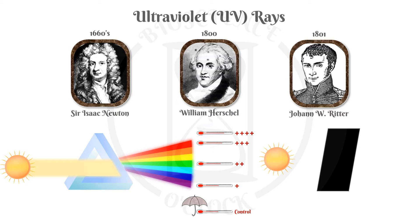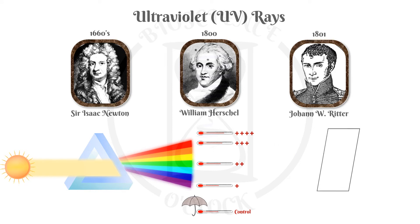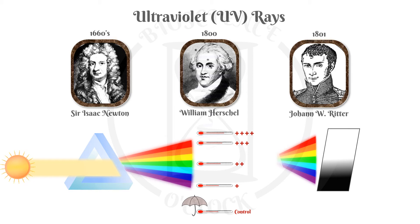Ritter's experiment went one step further and with the same setup, he realized that the darkening of the paper coated in silver chloride was more powerful beyond the violet light. And so, with this experiment, Ritter found invisible light beyond the violet spectrum, which he first called the oxidizing rays. These were later referred to as chemical rays for most of the 19th century, and today we call them ultraviolet rays.